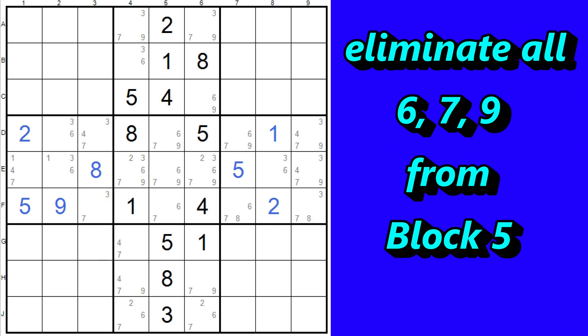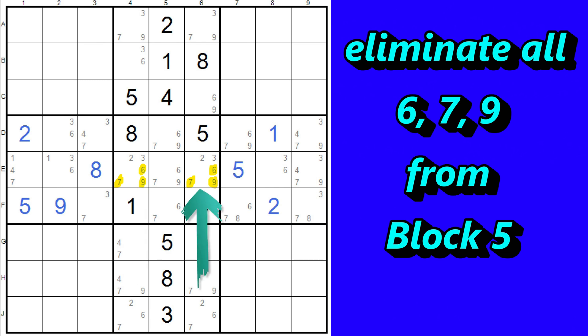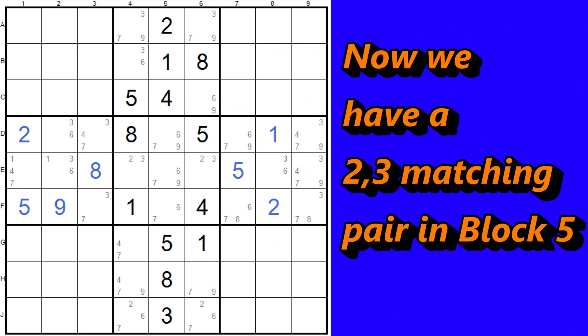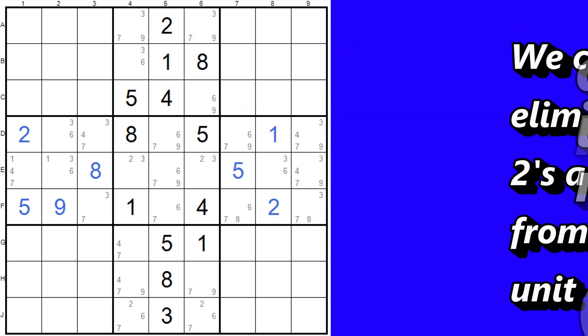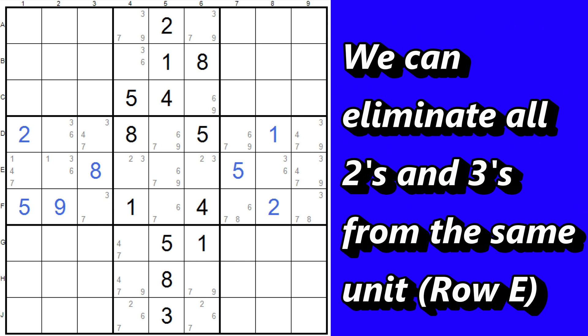Now we can eliminate the six, seven, and nine from this cell, and the six, seven, and nine from this cell, which leaves us with a two, three matching pair. This means that all the twos and threes in the same unit — in this case the row — can also be eliminated. So we can eliminate all these threes, and now this cell becomes a six.